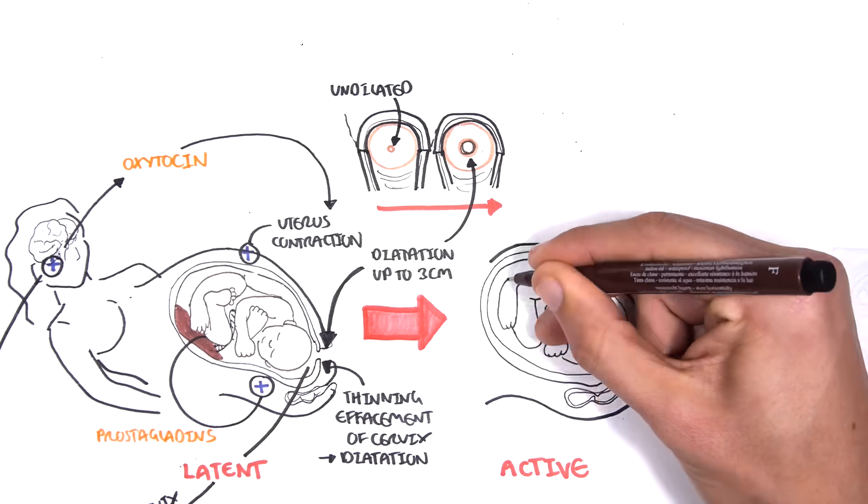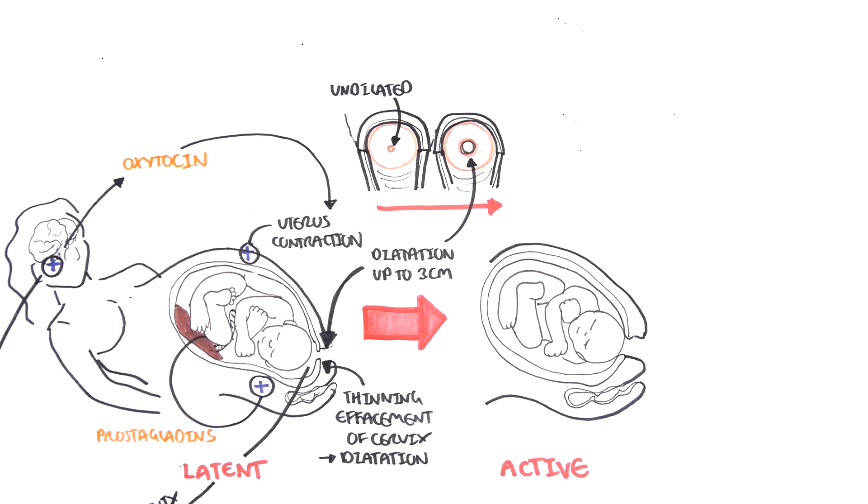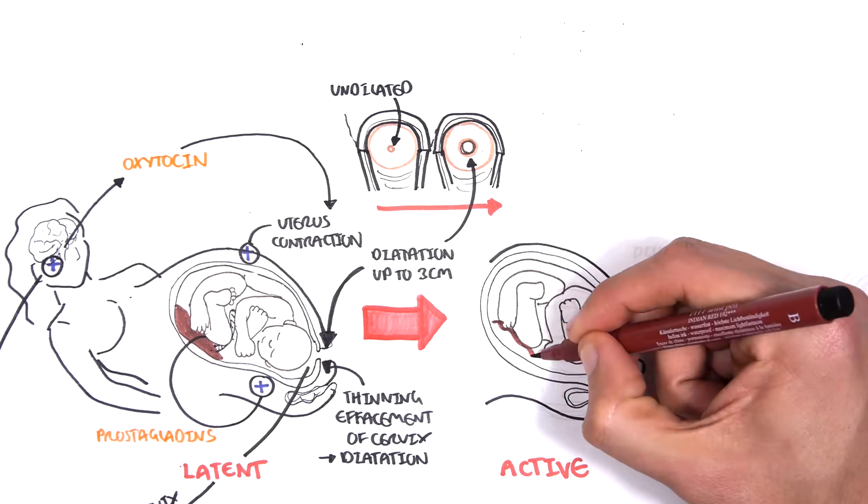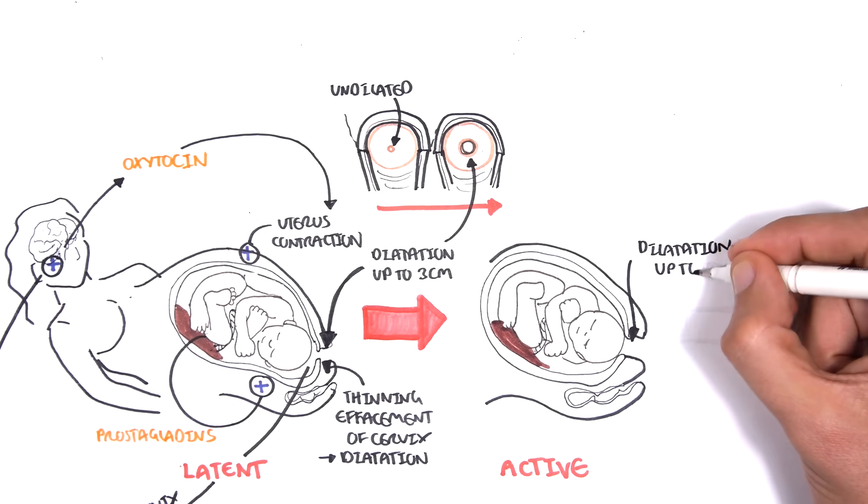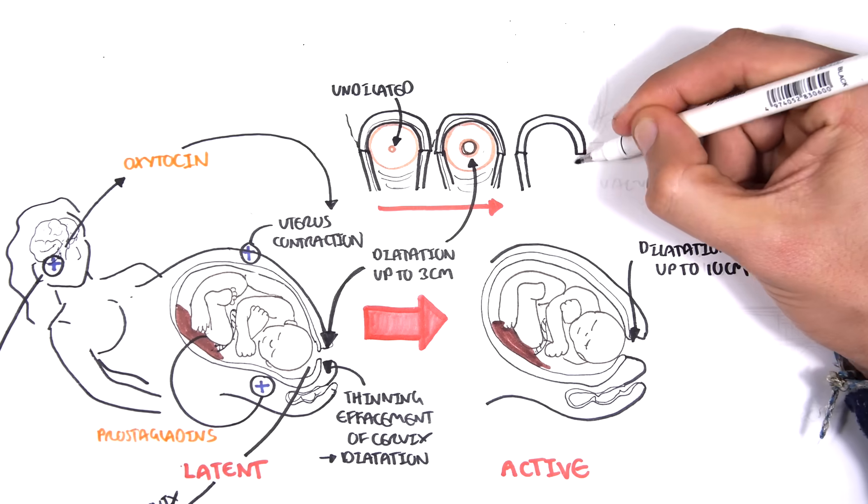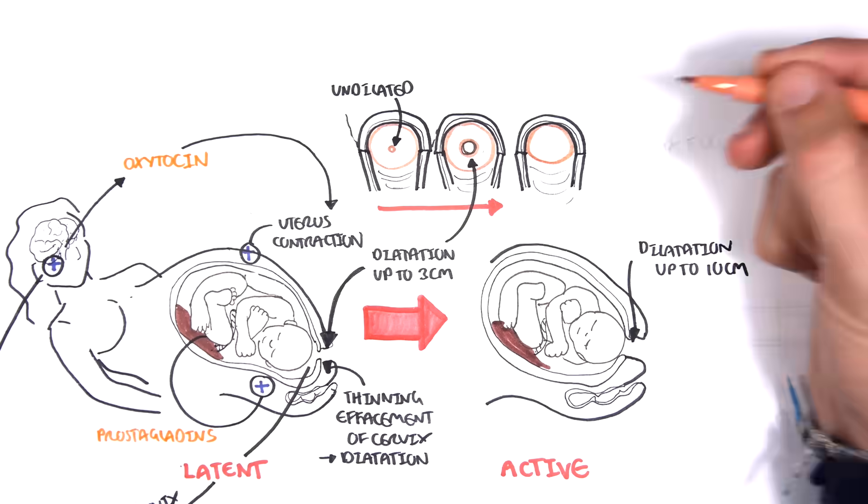In the active phase of stage 1 of labor, the cervix continues to dilate. The contractions are regular and more painful. The cervix is fully dilated when it is 10cm. This is where you can see crowning of the baby's head.